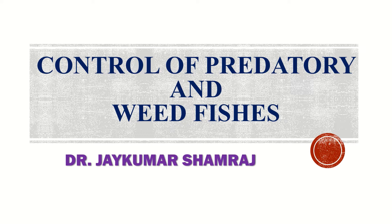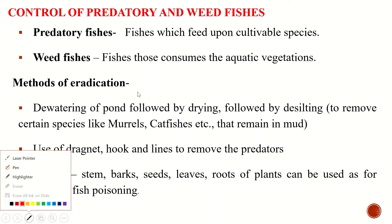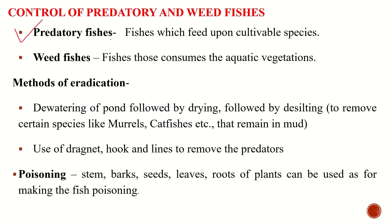The fishes which feed on our cultivable species are called predatory fishes. Predatory fishes means the fishes which feed upon our cultivable species. And weed fishes are those fishes which consume the aquatic vegetation and thus compete with the fishes under cultivation.